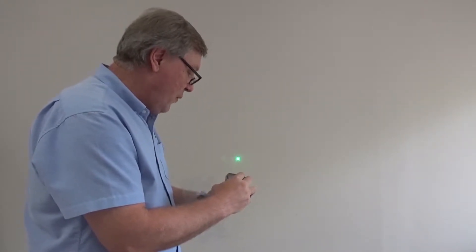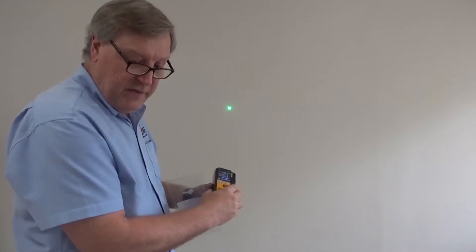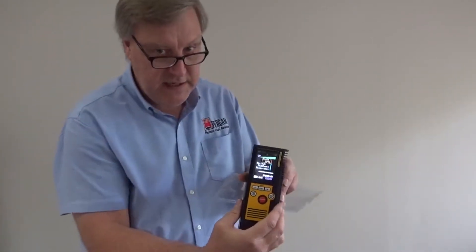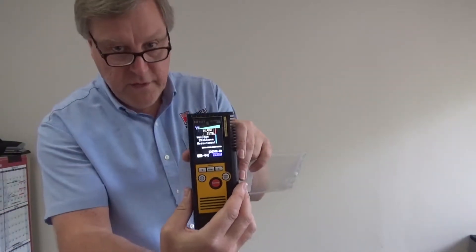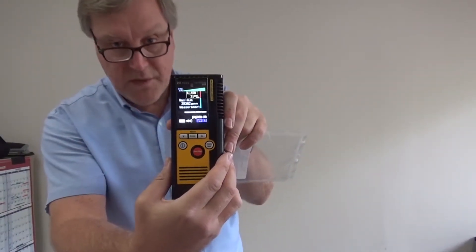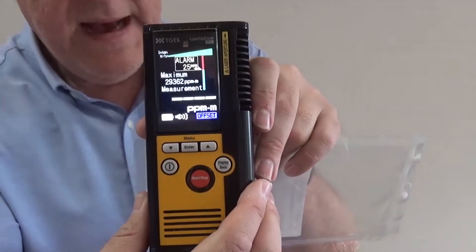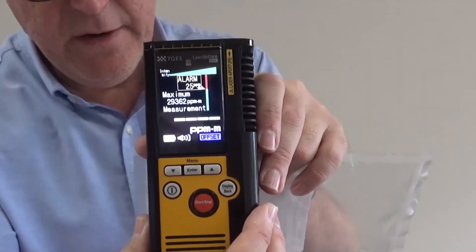And what I am going to do at this point in time, I am going to bring the instrument a little closer to the camera so that you can actually see what the user interface looks like. So you'll see we almost have 30,000 parts per million because we have high concentration lab methane in our bag.